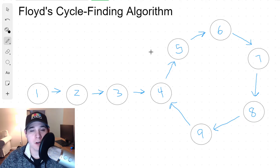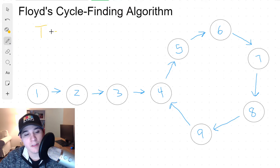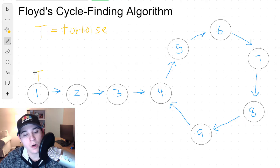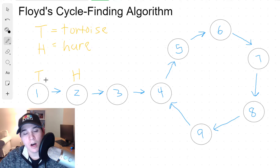If you already know Floyd's cycle finding algorithm, feel free to skip this part of the video. The idea behind the algorithm is we're going to have two different pointers. The first pointer is T, which stands for tortoise, and the tortoise pointer will always start at our head node — that would be node 1. Then we have the H pointer, which stands for hare, and the hare pointer starts at head.next, which is node 2. The tortoise on every iteration will move one step forward.